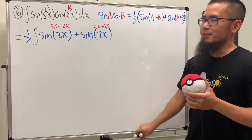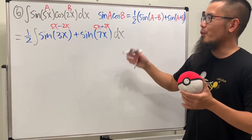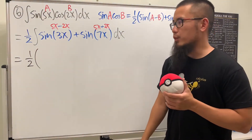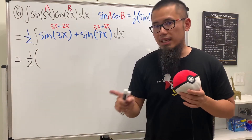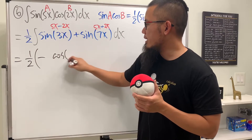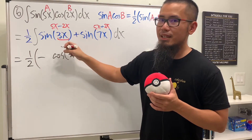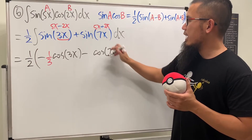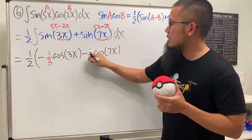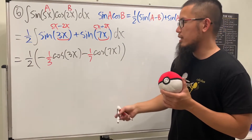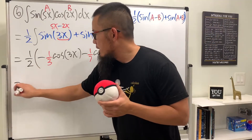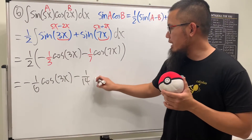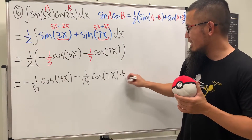That identity is really useful for this situation. We have one half in front, and we integrate: integrating sine gives negative cosine. So we get negative cosine of 3x divided by 3, then negative cosine of 7x divided by 7. Multiplying in the one half, we finally get negative one-sixth cosine of 3x minus one-fourteenth cosine of 7x, plus c.